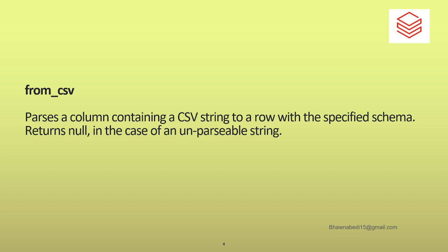When we talk about the from_csv function, sometimes in your data you might have a string format of a column. Whenever you are working with big data — semi-structured or unstructured data — you might get a textual or string format of that data. The from_csv function actually helps you to parse the column which contains a CSV string, using the specified schema. If it is not parsable, it will return null.